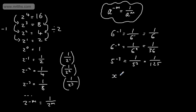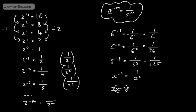Now let's say we had x to the minus 2 — this is 1 over x to the positive 2, or 1 over x squared. If we had 3x to the minus 2, we are only raising the x to the minus 2, so we'd have 3 over x to the positive 2.